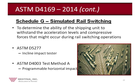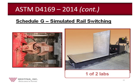The two standards for rail switching are ASTM D4003 using Test Method A, requiring a programmable horizontal impact tester, and ASTM D5277, which requires an incline impact tester. The photo on the left shows two different rail cars coupling within the rail switching yard. The photo on the right shows the horizontal impact tester that would simulate such coupling. Westpac is one of two labs in the USA to have this equipment in use.